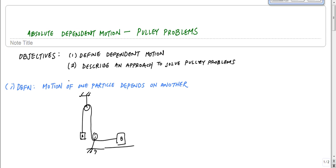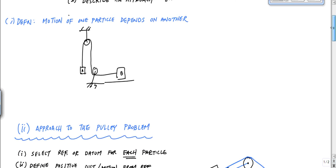Cranes probably have dependent motion as well. Elevators, depending on how they were built, and just anything that's connected with a cord, and you can model it as two particles.